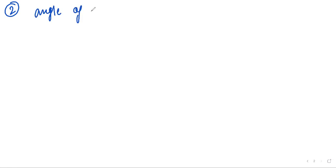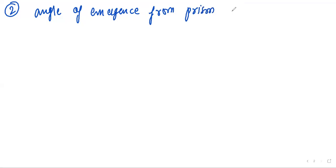The second question: find the angle of emergence from the prism. The refractive index of the glass is given as mu = √3.